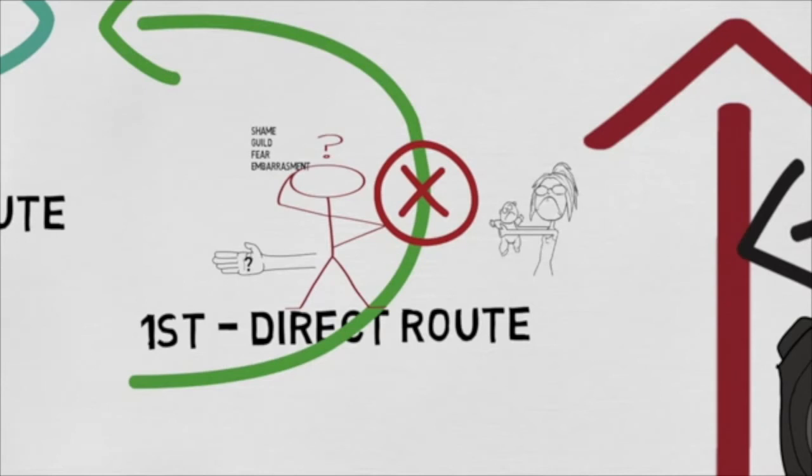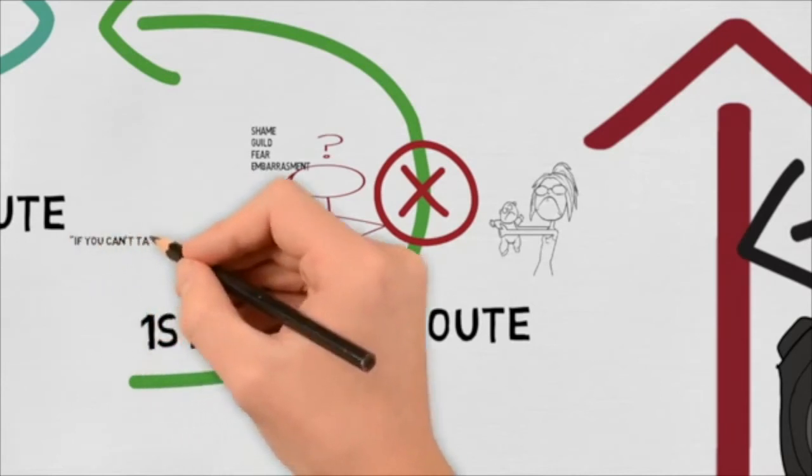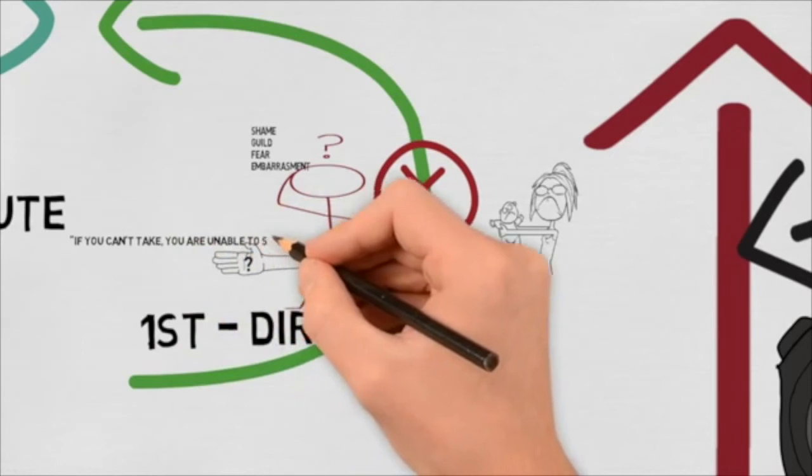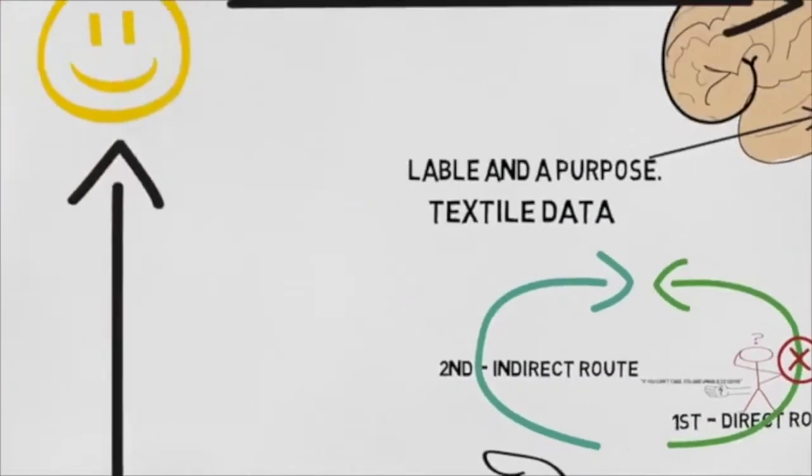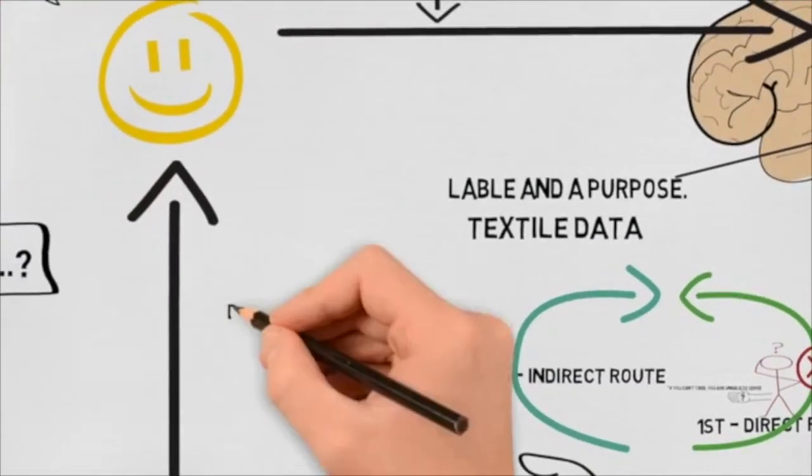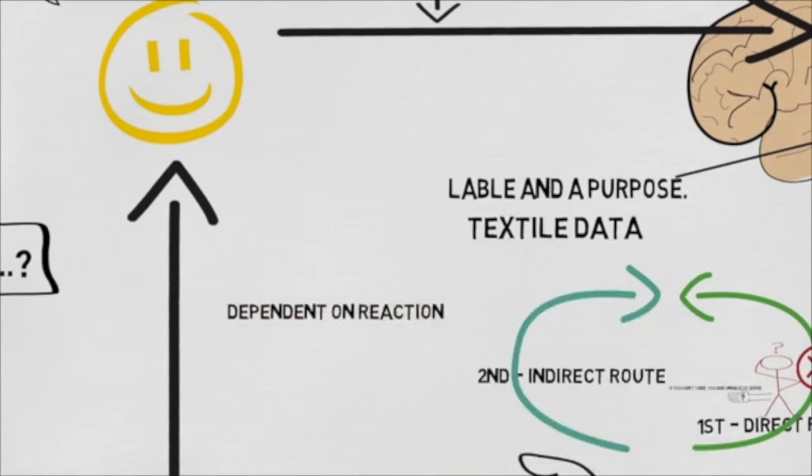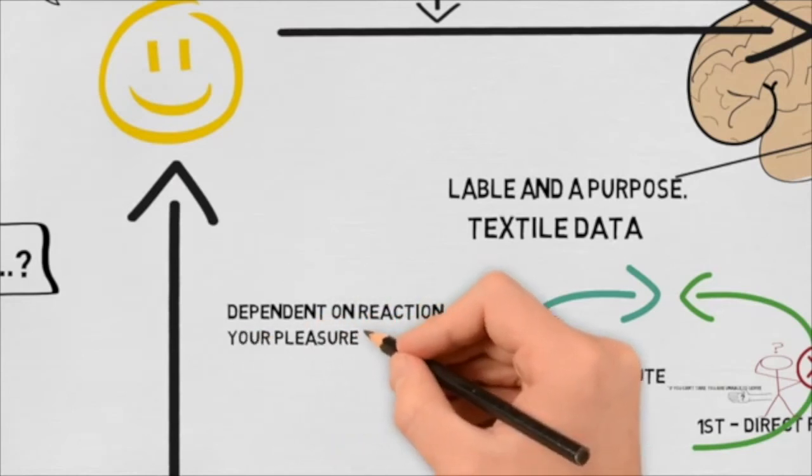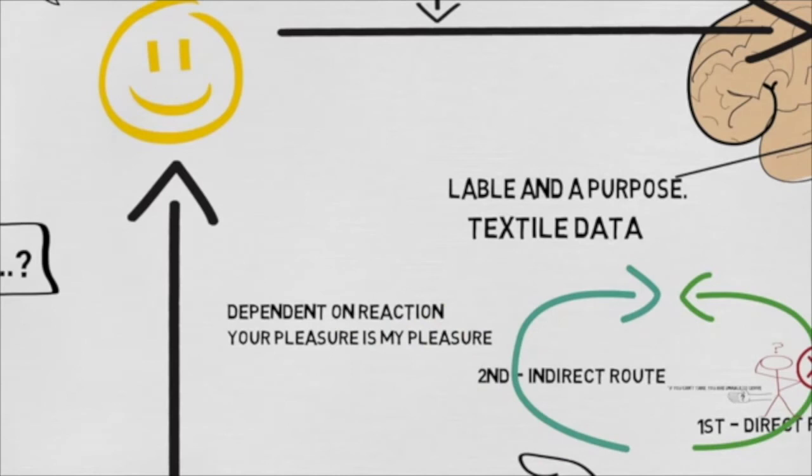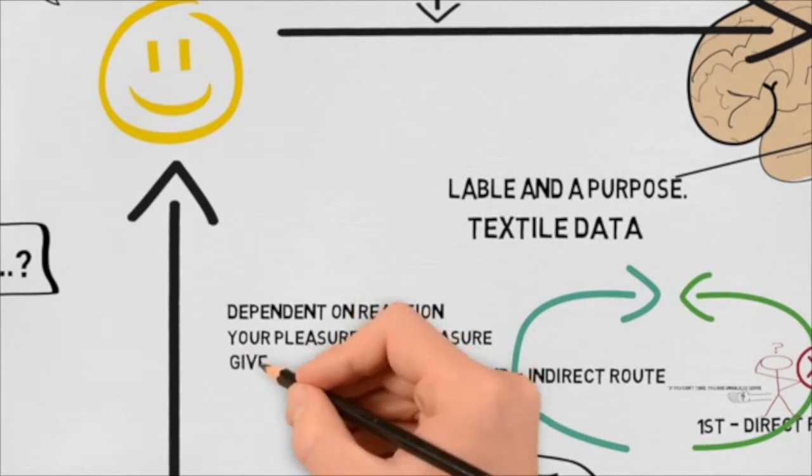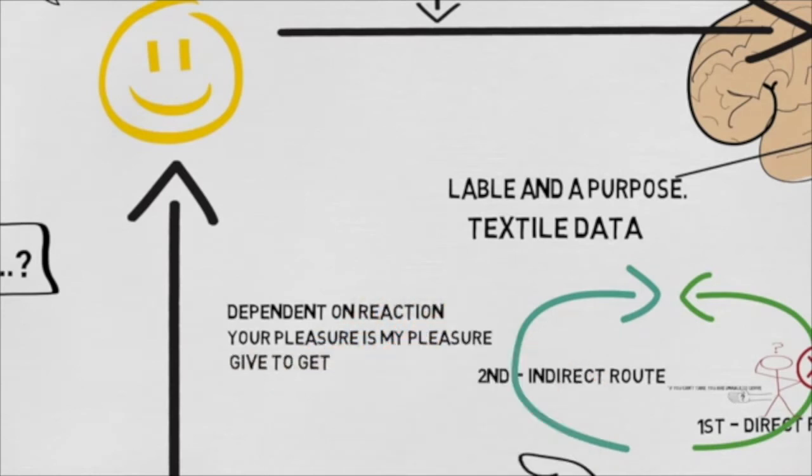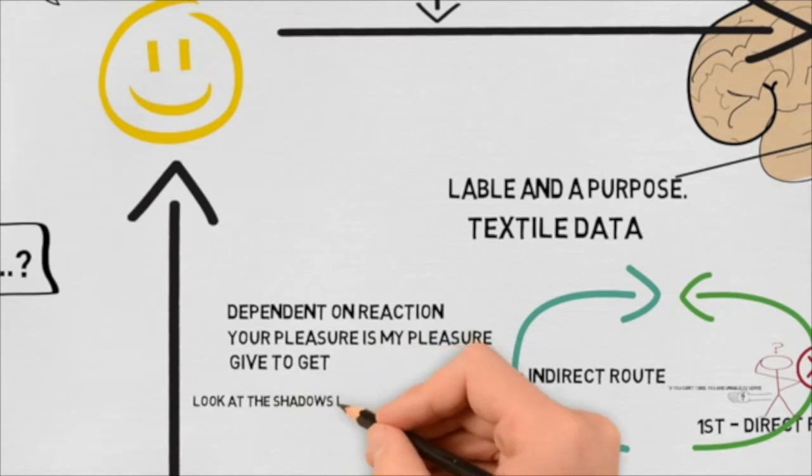If you can't take, you are unable to serve. So a touching person with a confused hand is dependent on the other person's reaction and happiness and if they are getting turned on. Your pleasure is my pleasure is a typical phrase, or gift to get. And they try all different tricks out of their touch skill basket.